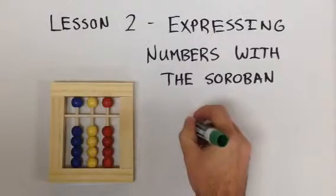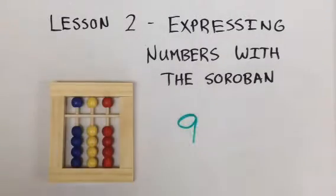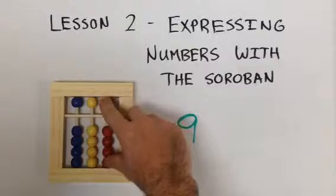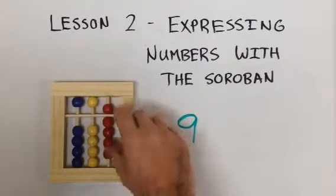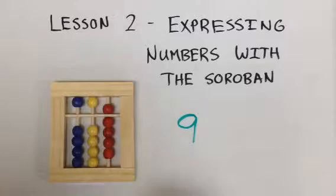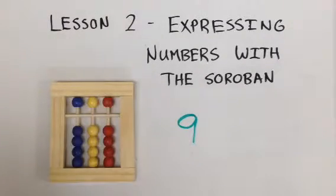How about the number 9? Go ahead. Again, taking both our fingers, we bring the 5 down and the 4 lower beads up. This expresses the number 9. Going back to 0.